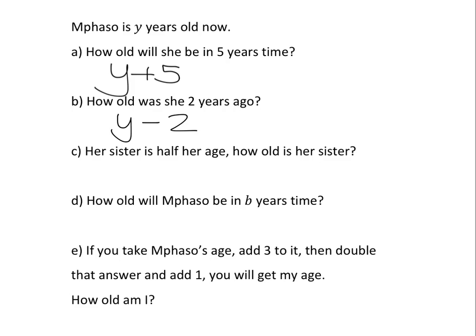What about the next one? If her sister's half her age, how old is her sister? Pause the video, try it, and we'll go over it. So to work out how old her sister is, well we've just got to take whatever age Mbasu is and we have to halve it. So we have to take whatever age she is and halve it, which means divide it by two.